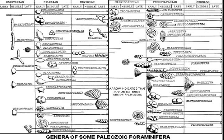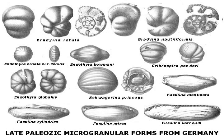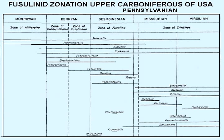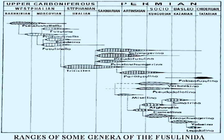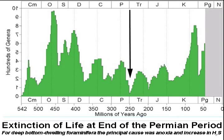Then both agglutinates and the first microgranular wall genera blossomed. The newcomers include the endothyroids, pictured here from the German Carboniferous, and their relatives the Fusulinids, proliferous in shallow seas during the late Carboniferous and Permian. These charts — one of the Pennsylvanian of the United States, the other of the USSR — show that they evolved rapidly, providing large numbers of closely spaced stratigraphic markers.